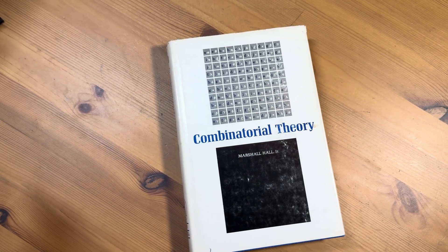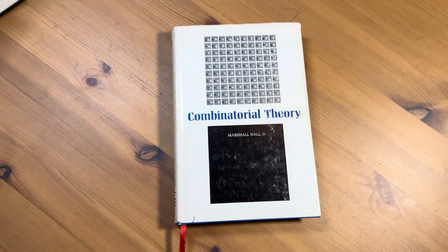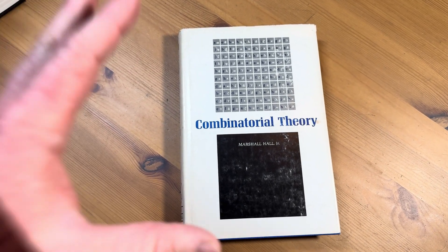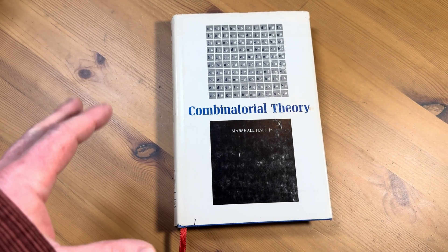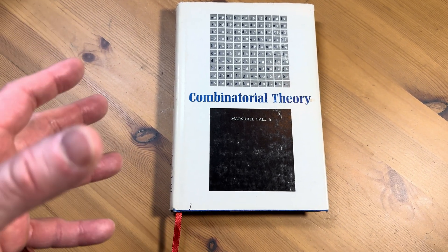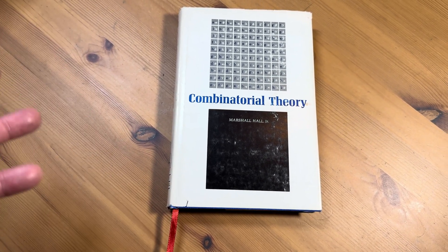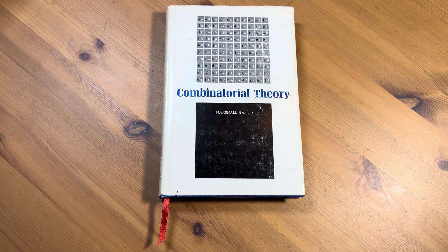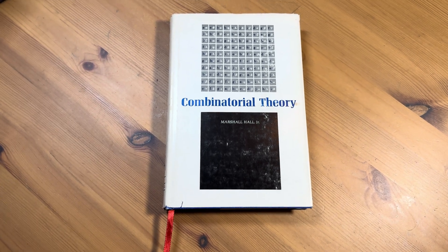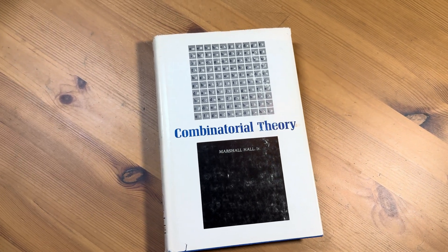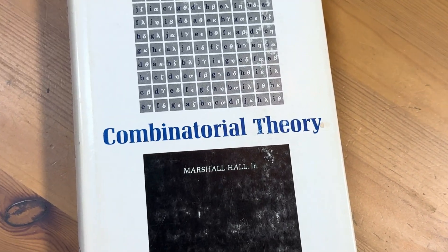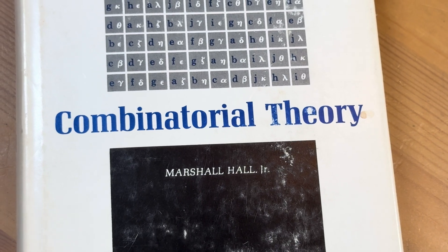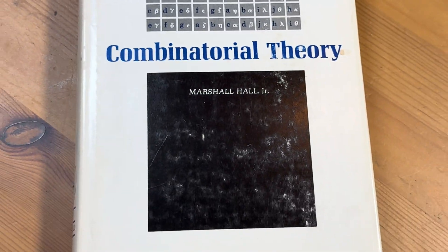This is a fancy math book. I really wish that they still made math books like this. I don't know if there would be a market for it — maybe that's why they don't do it. Anyways, in this video we're going to take a look at this super fancy book. It is called Combinatorial Theory, and it was written by Marshall Hall Jr.